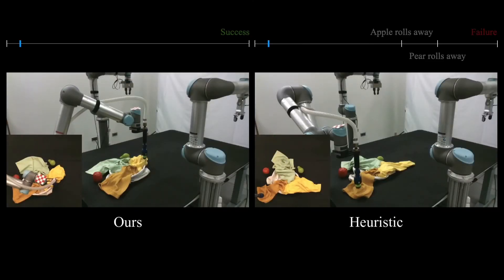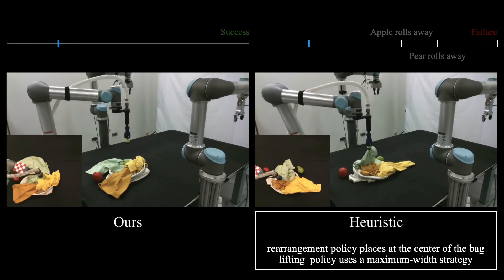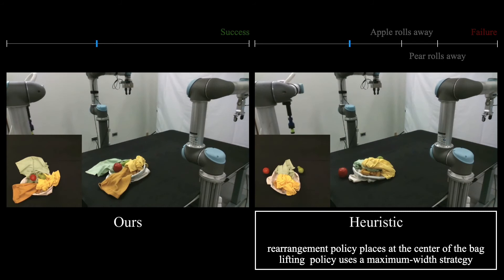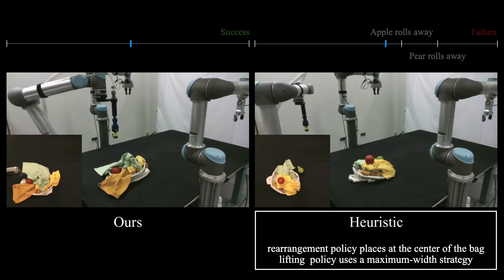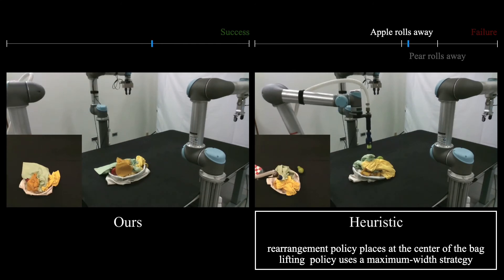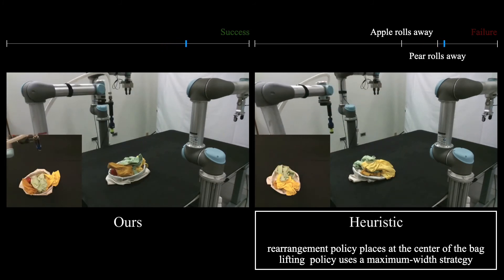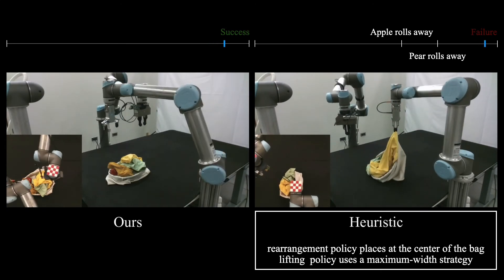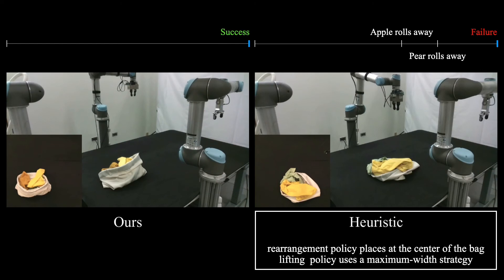Since there are no existing works for the task of heterogeneous bagging, we design strong heuristic baselines for comparison. The heuristic rearrangement policy selects a random point on the objects that are non-overlapping with the bag and places it at the center of the bag, as you can see on the right. While our policy, on the left, is able to strategically place rigid objects and fold deformable objects inside the bag opening, the heuristic always places at the center. This often results in objects stacking and then falling or rolling away, as in the case of the apple, and then now the pear. Once the heuristic is unable to find a valid pick point, it decides to lift. The heuristic lifting policy uses a maximum width lifting strategy and is unsuccessful at lifting the bag. On the other hand, our policy lifts once a desirable pre-bagging configuration is achieved and infers suitable grasp points from which to lift up the bag successfully, such that all the objects fall inside.